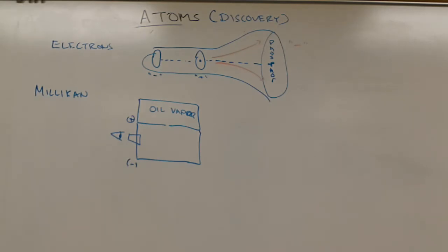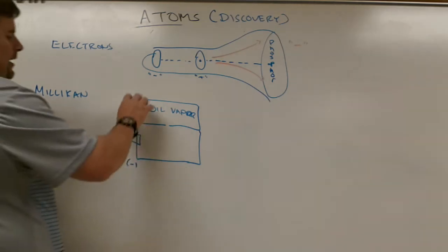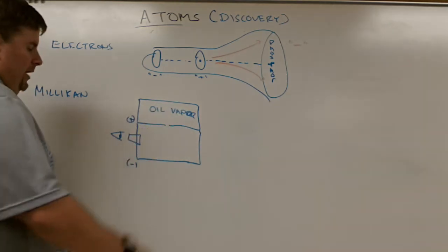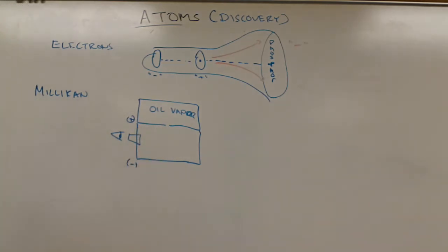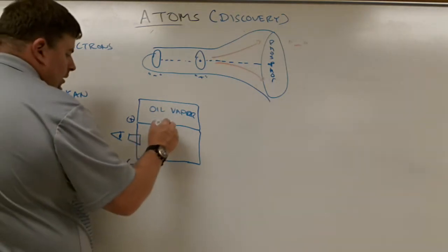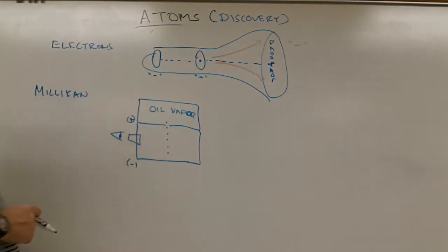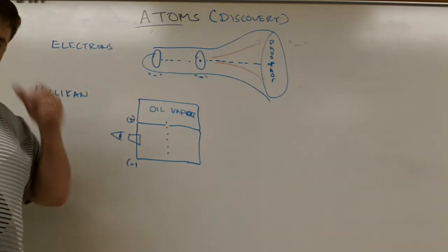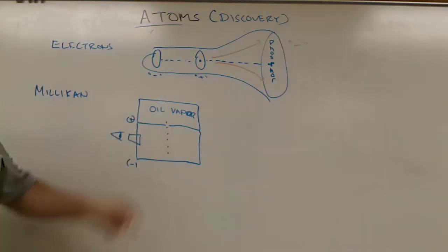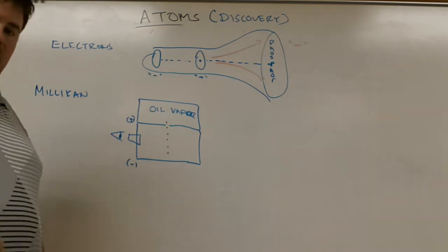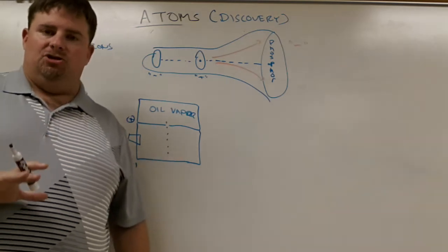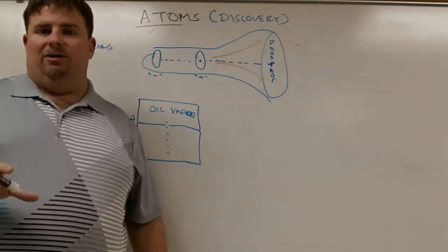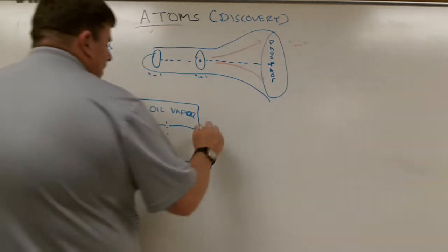What he did is he took an atomizer and vaporized some oil into a fine mist. As this mist was flying around, he applied a charge to two plates, and the oil vapor would drip down through the hole. By varying the amount of charges there and observing the rate of descent of the electrons, if he changed the charge, the descent would change as well. By making these changes, he was able to use mathematical formulas to determine the mass of an electron.